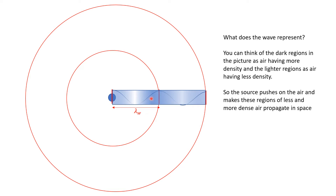It's important to review what we mean by this cosine or sine function that's propagating. You can think of it as a pressure wave moving outward. Where there's a peak, the pressure or density of the air is higher. Where there's a trough, the density of the air is lowest. So this cosine wave represents the propagation of regions of high and low density of air moving outwards.